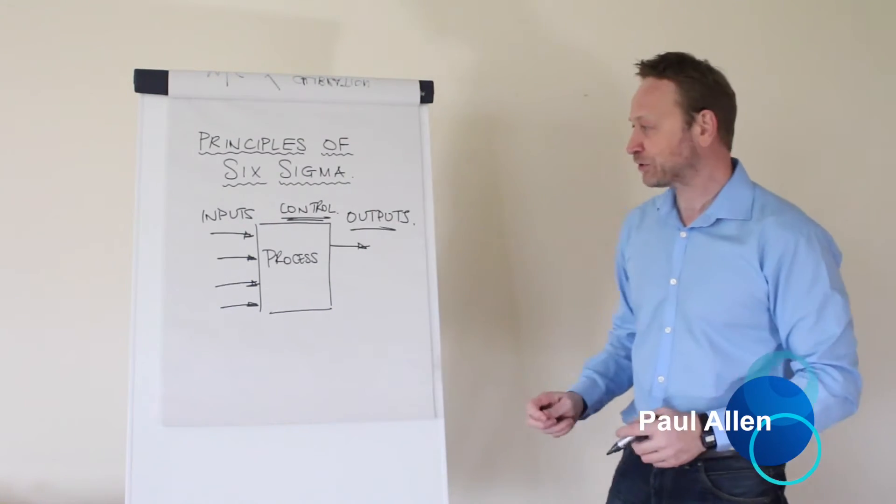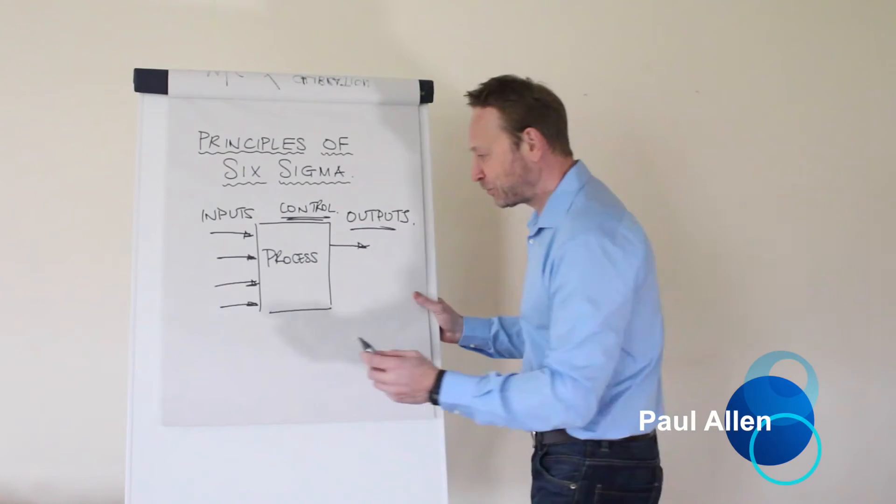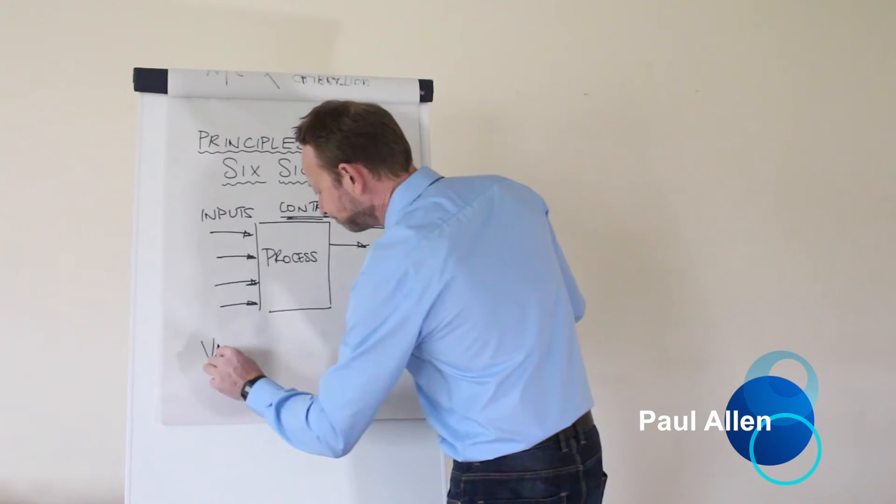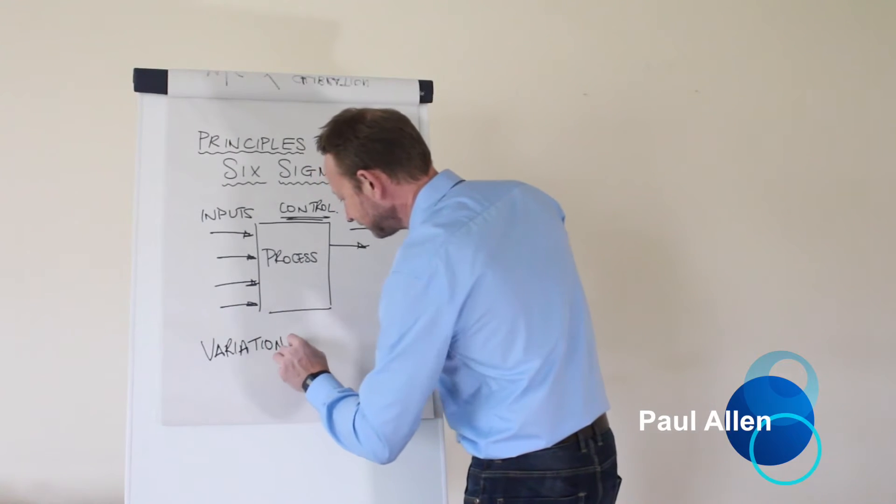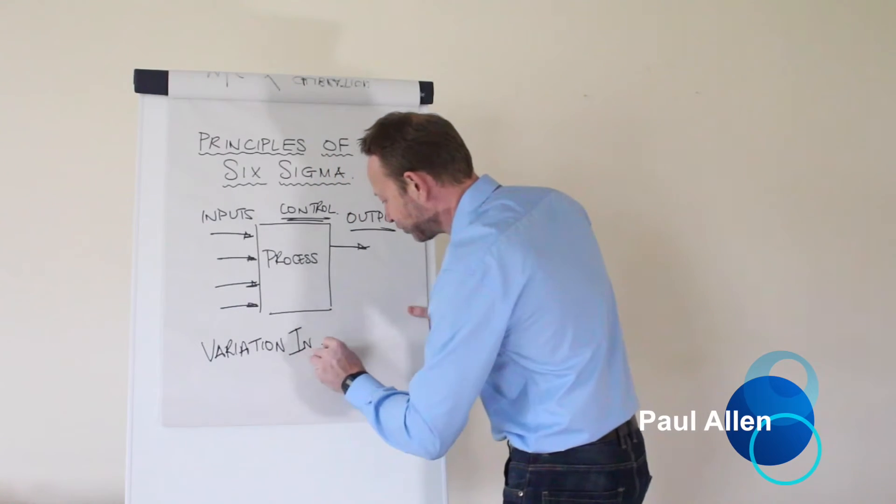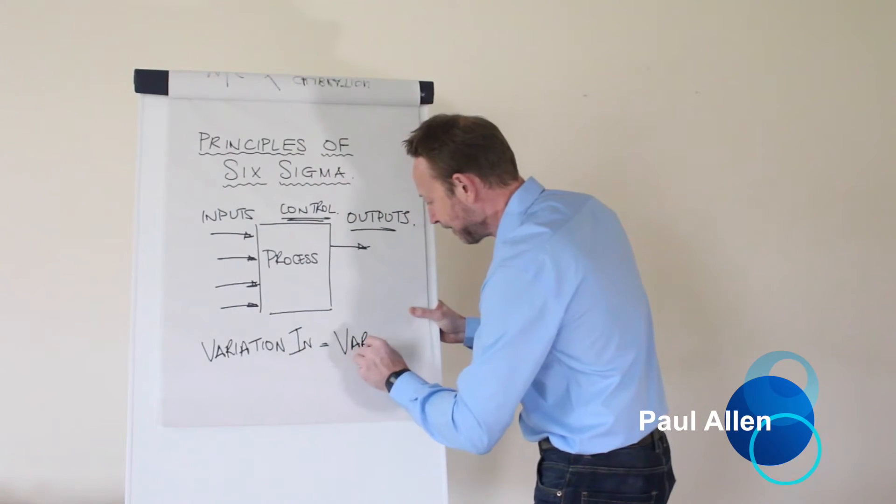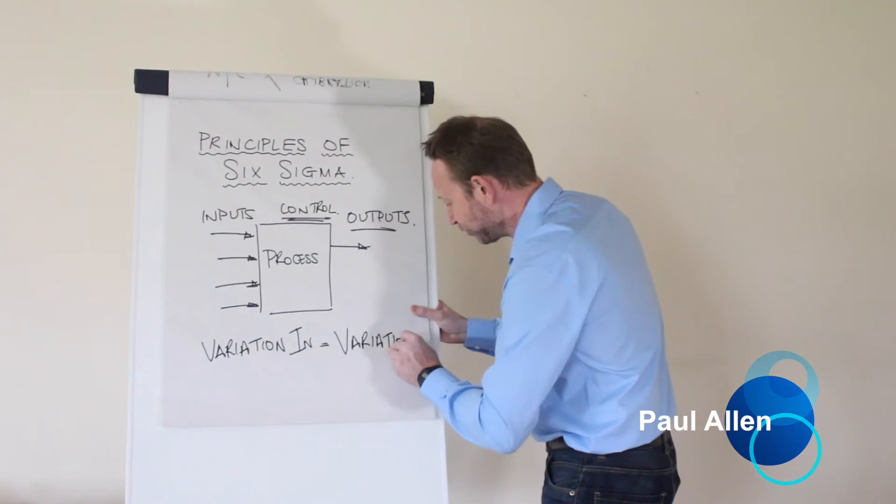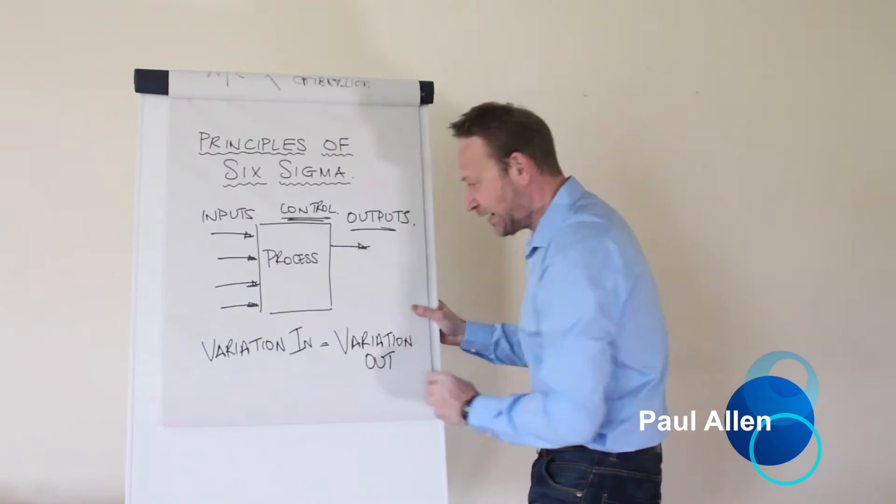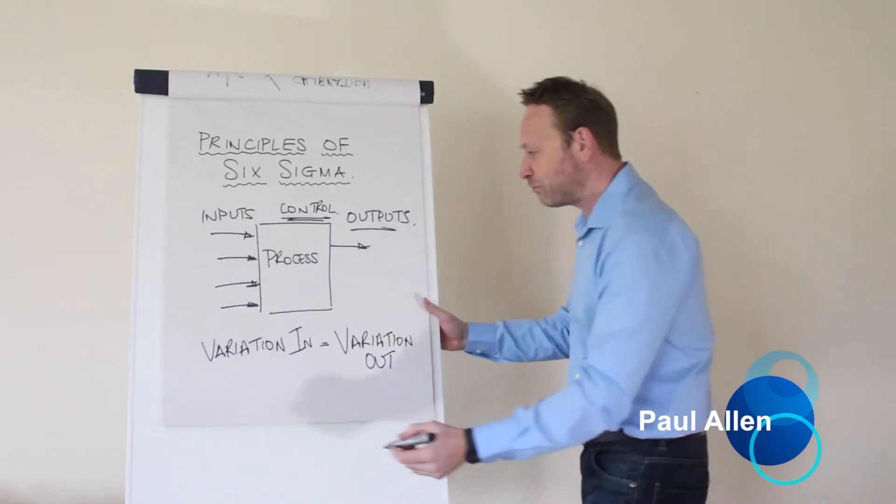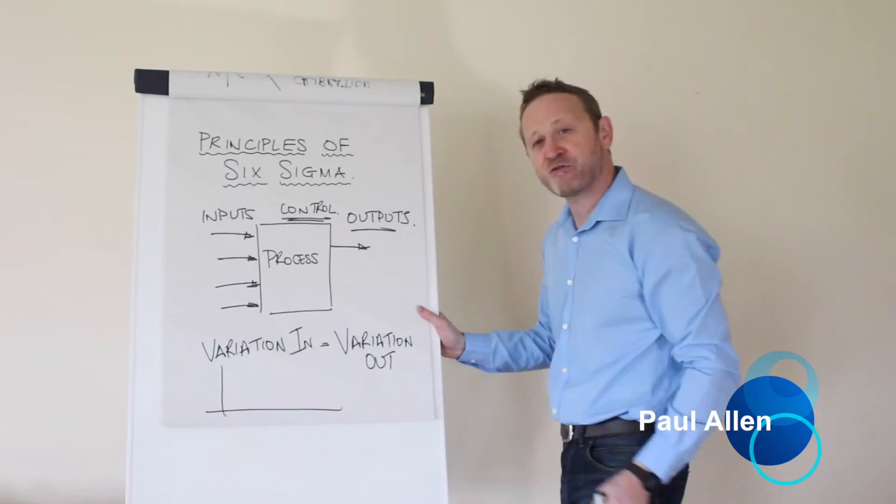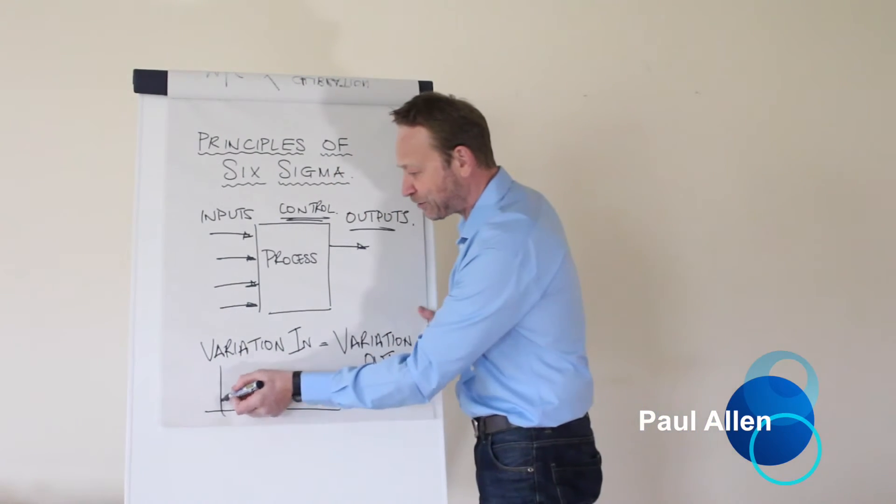So we have inputs controlling outputs and the basic principle that we have is if you get variation into a process, you are obviously going to get variation out in an equal amount and it's variation that kills the performance of a process. It's variation that creates chaos.